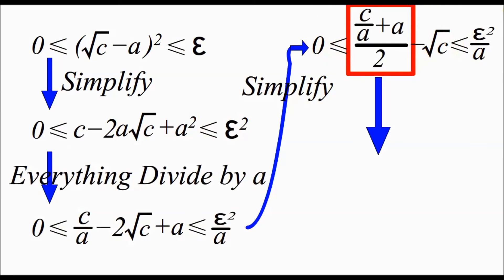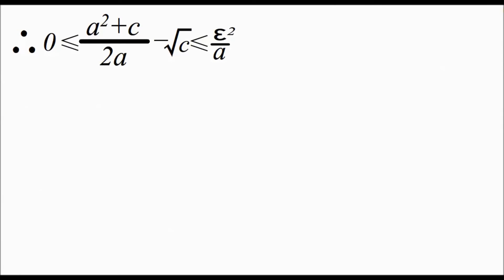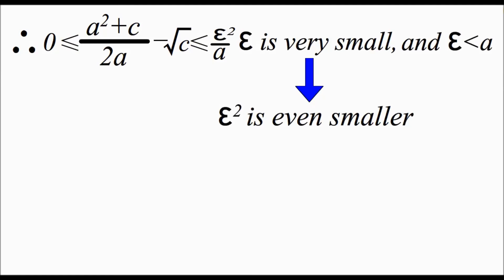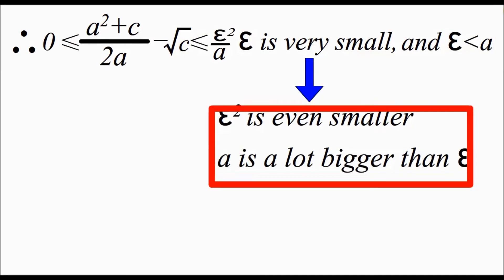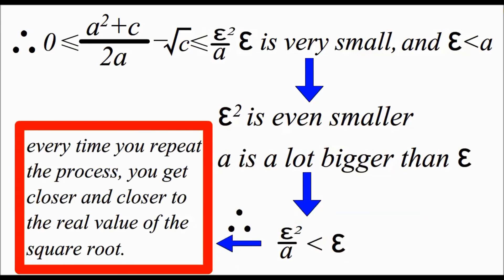Now remember, this thing over here is equal to a squared plus c all over 2a. Therefore, our secondary approximation minus the square root of c is going to be less than or equal to epsilon squared divided by a, and greater than or equal to 0. As I said before, epsilon squared is way smaller than epsilon. And since a is way bigger than epsilon, epsilon squared divided by a has to be less than epsilon. Therefore, every time you repeat the process, you get closer and closer to the real value of the square root.